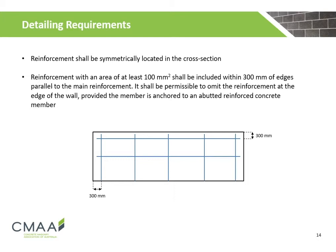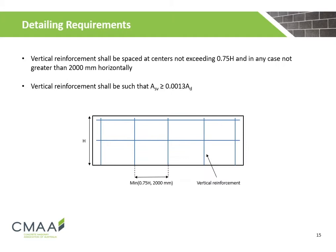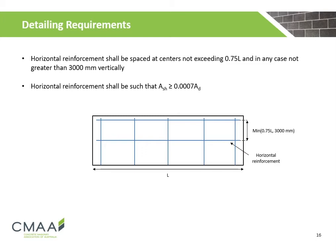Here are the detailing requirements for shear design of a reinforced masonry wall. Reinforcement shall be symmetrically located in the cross-section and shall have an area of at least 100 mm², located within 300 mm of the edges parallel to the main reinforcement. Vertical reinforcement shall be spaced at centres not exceeding 0.75 times the height of the wall, and not greater than 2,000 mm horizontally, with an area greater than or equal to 0.0013 times the design area. Horizontal reinforcement shall be spaced at centres not exceeding 0.75 times the length of the wall, and not greater than 3,000 mm vertically, with an area greater than or equal to 0.0007 times the design area.